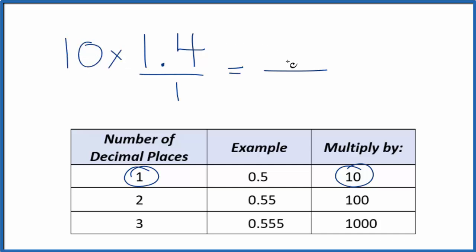10 times 1.4 gives us 14, so this is a whole number now. But 14 doesn't equal 1.4, so we need to also multiply the bottom here by 10. When we do that, 10 times 1, that's 10.